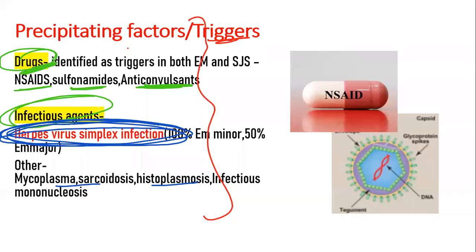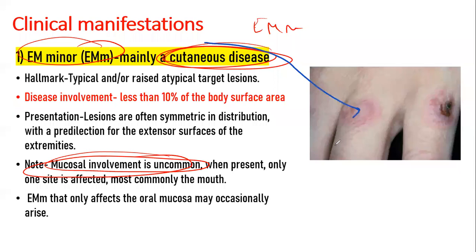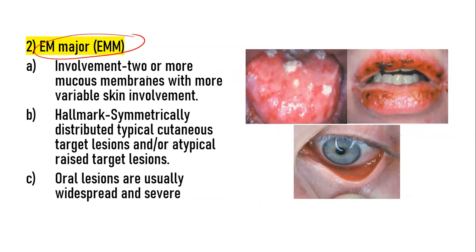The clinical manifestation of Erythema Multiforme minor is mainly a cutaneous lesion with mild or no mucosal involvement. There is localized skin involvement, and the mucosal involvement is none or mild — meaning only one mucous membrane, most commonly the mouth. On the other hand, in Erythema Multiforme major, there is involvement of the skin plus two or more mucous membranes, such as the tongue, lips, and conjunctiva of the eye.